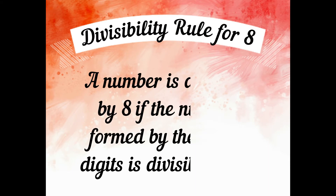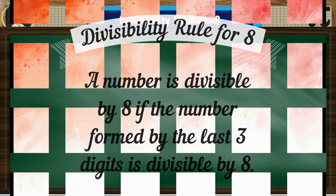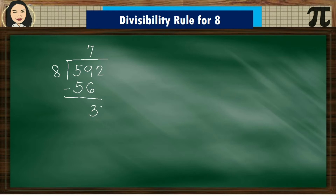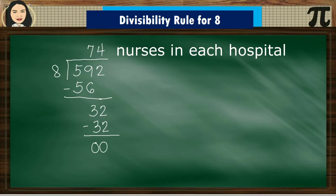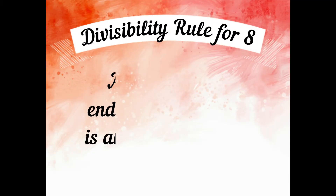Divisibility Rule for 8: A number is divisible by 8 if the number formed by the last 3 digits is divisible by 8. So we have 592 divided by 8: 59 divided by 8 is 7; 7 times 8 is 56; 59 minus 56 is 3. Bring down 2: 32 divided by 8 is 4; 4 times 8 equals 32; 32 minus 32 equals 0. The answer is 74 nurses in each hospital. Therefore, 592 is divisible by 8.